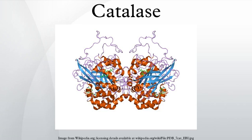Catalase is a tetramer of four polypeptide chains, each over 500 amino acids long. It contains four porphyrin heme groups that allow the enzyme to react with the hydrogen peroxide. The optimum pH for human catalase is approximately 7, and has a fairly broad maximum. The pH optimum for other catalases varies between 4 and 11 depending on the species. The optimum temperature also varies by species.